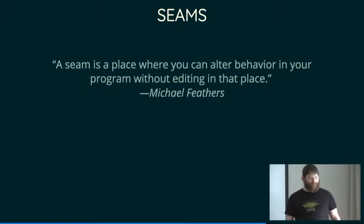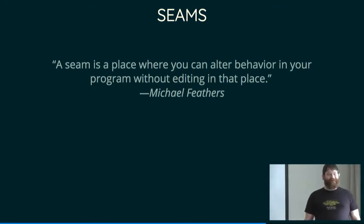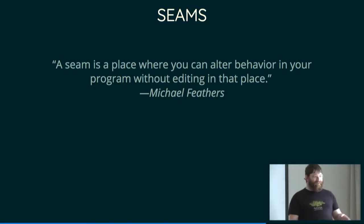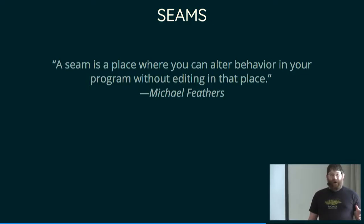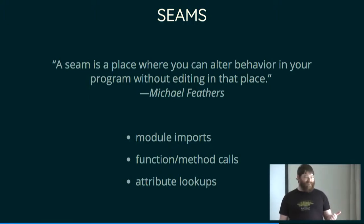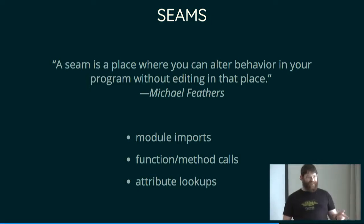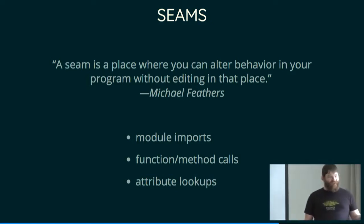So seams. A seam is a place where you can alter behavior in your program without editing in that place — again, Michael Feathers. The great thing about this is you can get your test doubles into the place they need to be without actually opening the file for the code you're trying to test. There are a whole lot of different kinds of seams which Michael goes into in his book, but the ones that are relevant to Python are things like module imports — because you can import a different module instead, or tell Python that this module is actually something else — and function and method calls, because there are various ways to sleight-of-hand swap those out underneath your program, and attribute lookups, which are kind of the same as method calls.